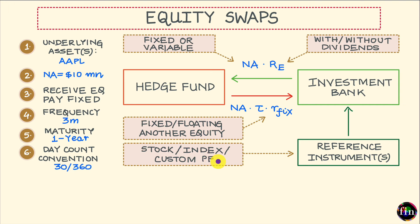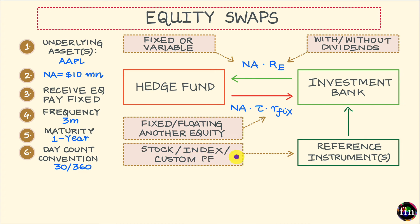Variations also exist on account of the type of reference instrument. In this example, it was a single equity which was our reference instrument. Reference instruments in equity swaps can very well be equity indices or custom portfolios containing single stocks as well as indices.